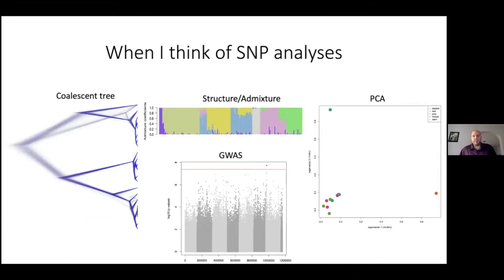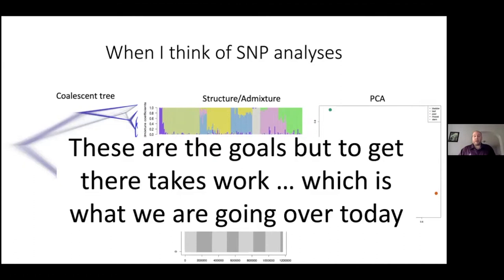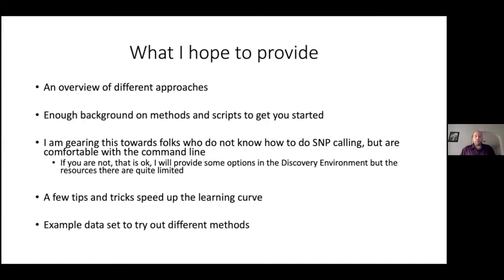When I think of SNP analyses, these are some of the things I think about: coalescent tree analyses to look at evolutionary relationships, structure or admixture analyses, genome-wide association studies, and principal component analyses. However, these are the goals, but getting there takes a lot of work. What I hope to provide in this webinar is just an overview of different approaches for SNP calling, enough background on methods, and then some scripts to get you started on your journey.